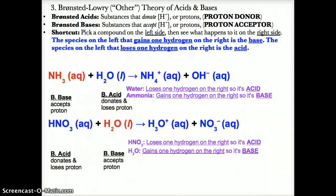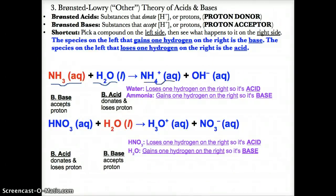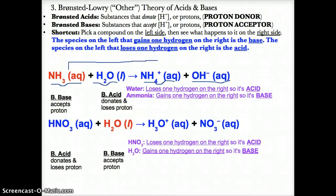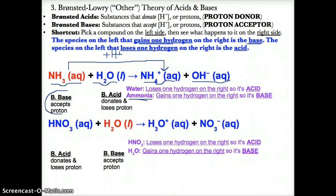Let's try an example: NH3 (aq) + H2O (l) → NH4+ (aq) + OH- (aq). We need to identify the Bronsted acid and Bronsted base on the left. NH3 goes to NH4+, which means it gains one hydrogen ion, going from NH3 to NH4+. Since NH3 gains one H+, it is the Bronsted base — it accepts the proton to go from NH3 to NH4+.